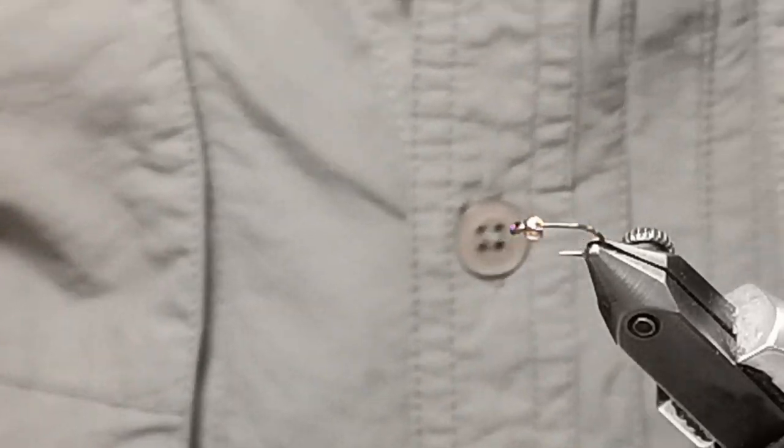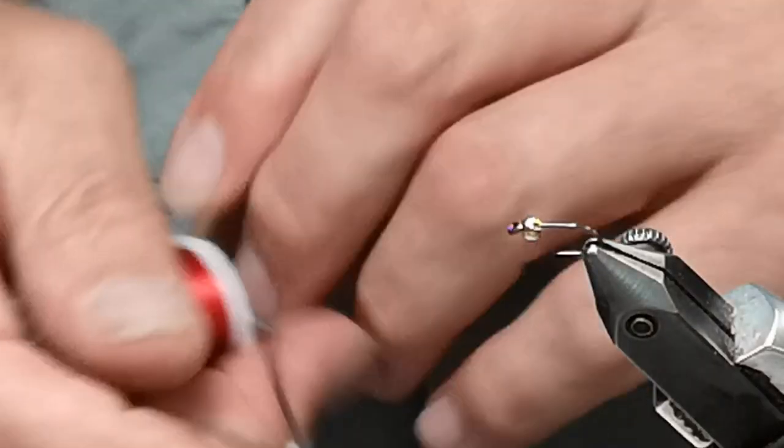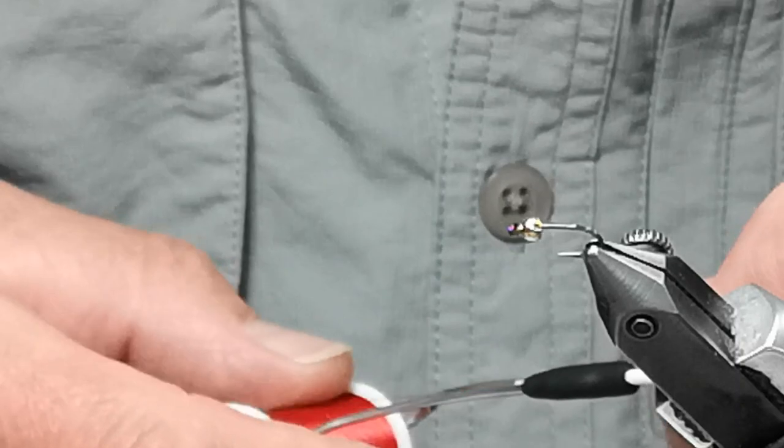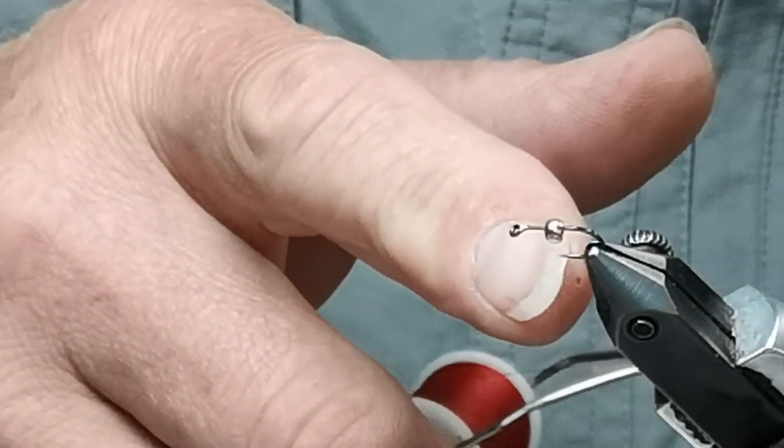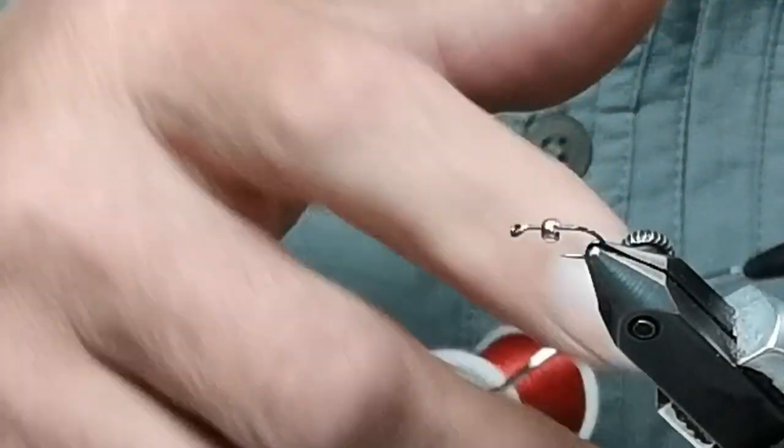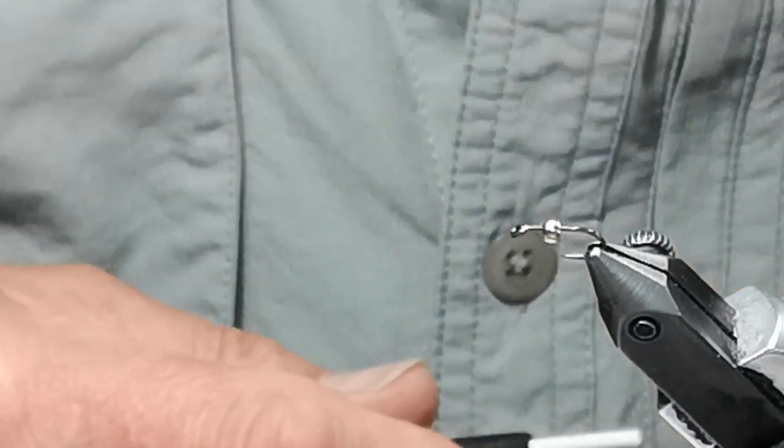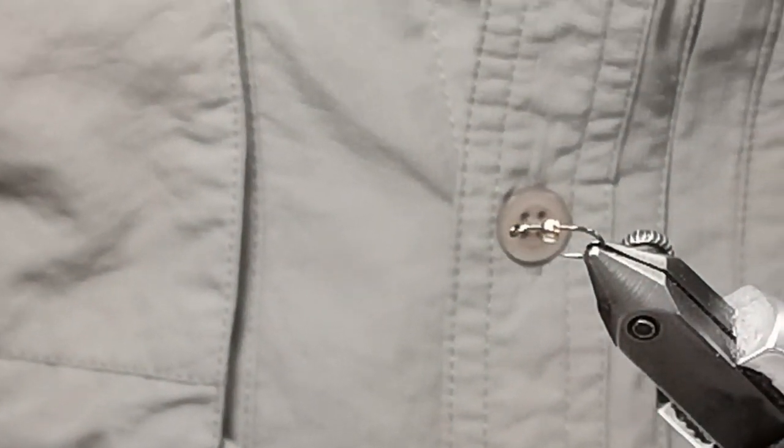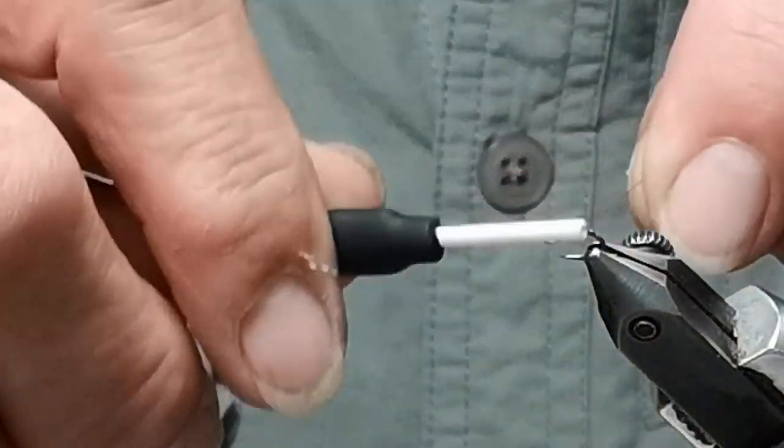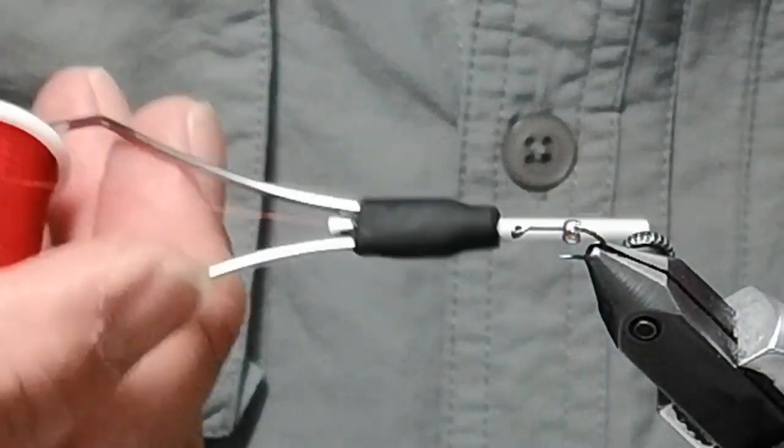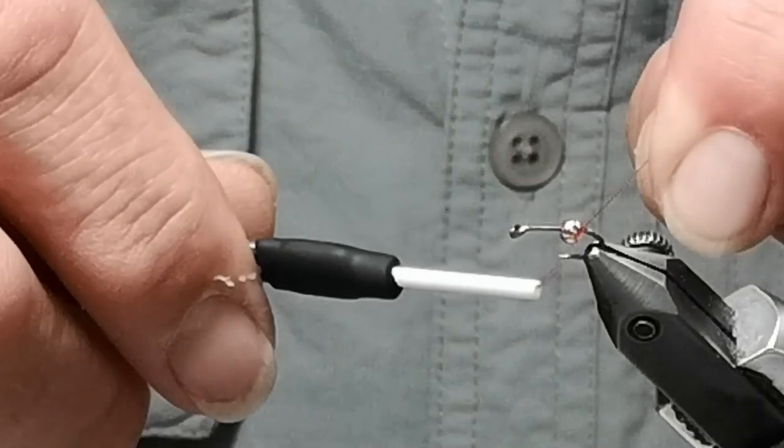Okay, this fly is a pheasant tail nymph with a gold bead head. I'm tying it on an S80 or a Daiichi 1530 hook. It's a heavy wire hook. I'm going to use red thread.